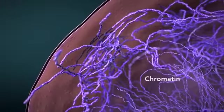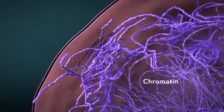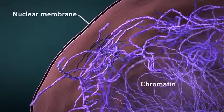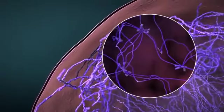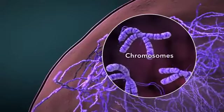Chromatin is the tangled spread out form of DNA found inside the nuclear membrane. When a cell is ready to divide, DNA condenses into structures known as chromosomes.